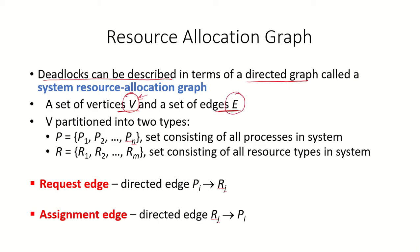The set of vertices has two types. One is the set containing all the processes in the system — if there are n processes P1, P2 to Pn, this set comprises all the processes. The other type is the set of resources: if there are m different types of resources, this set also comprises part of the vertices set.